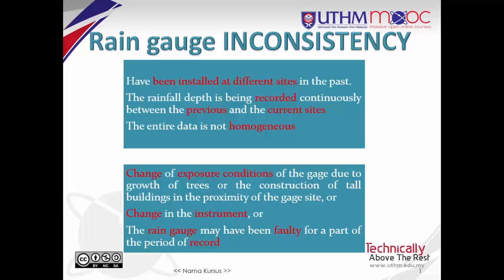Here are a few examples why measured data is not consistent. The rain gauges have been installed at different sites in the past. The rainfall depth is being recorded continuously between the previous and the current sites, so the entire data is not homogeneous.